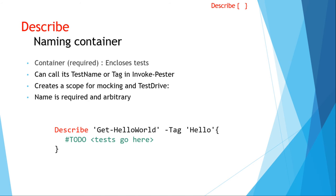Describe is a container — I consider it the naming container. When you run Invoke-Pester, there are TestName and Tag parameters, and they always refer to the name and tag on the Describe block. It creates a scope for both mocking and TestDrive. The name is required and arbitrary. One more thing that gets everybody: the curly brace must be on the same line as the Describe keyword, because that script block is the value of a positional parameter. There's a wonderful error message in Pester: if it can't find the script block, it says 'Did you put the curly brace on the next line?'